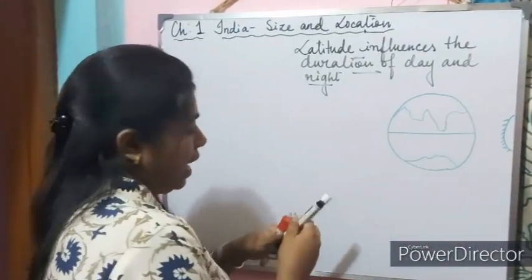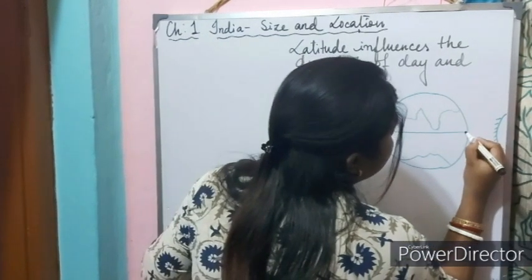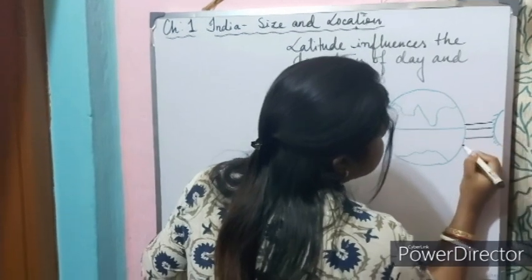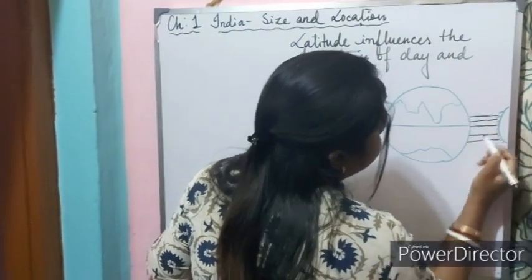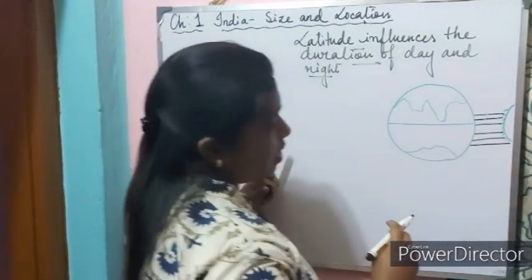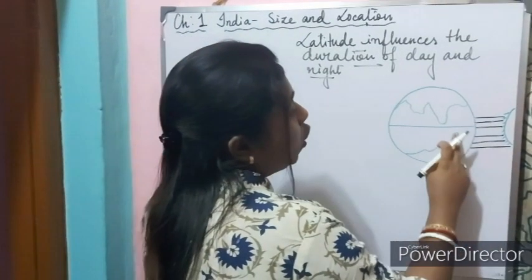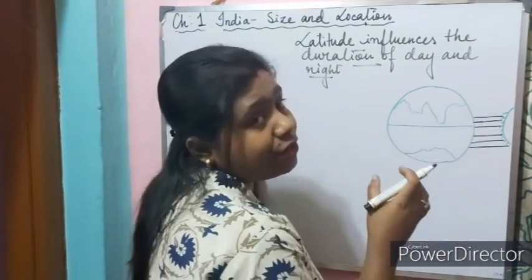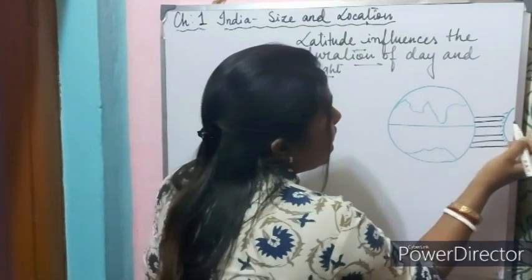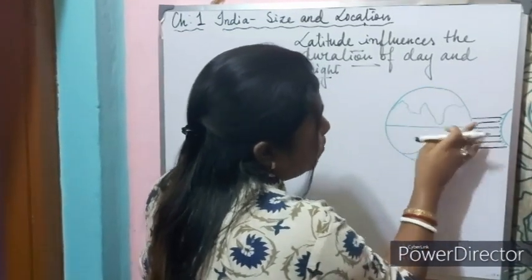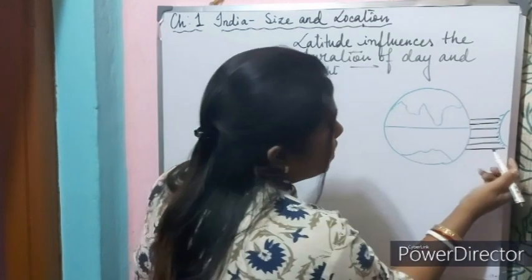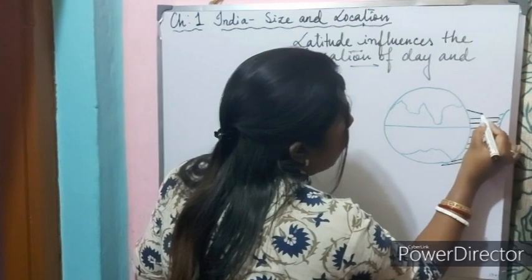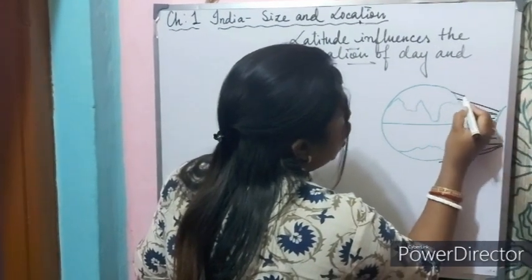Now let us understand how latitude influences the duration of day and night. Areas closer to the equator receive direct rays of the sun and will hardly feel any difference between day and night. As latitude increases, the distance from direct sunlight increases, and the sun's rays become more slanting as they travel a longer distance.